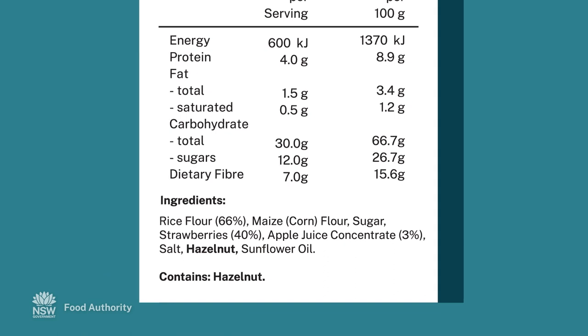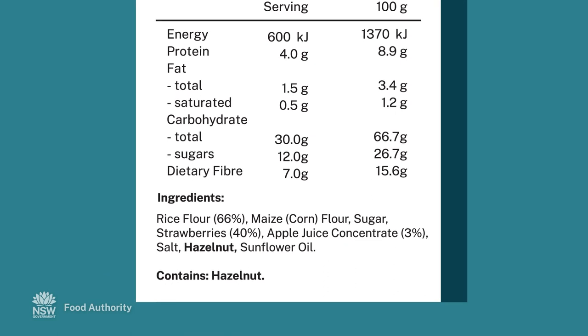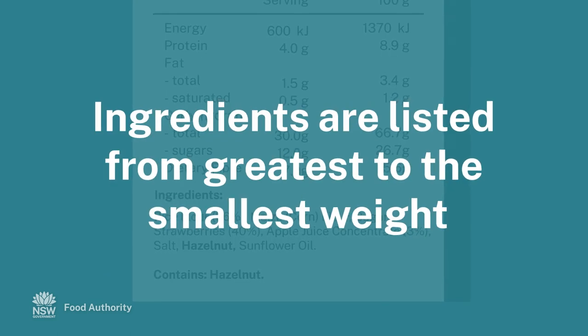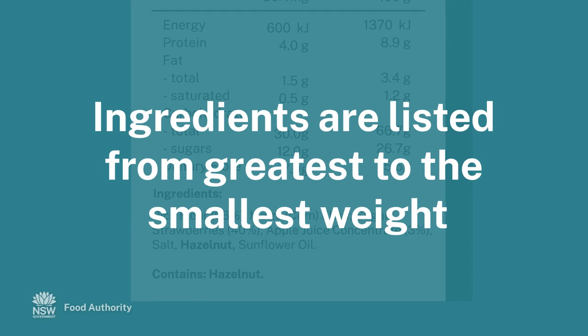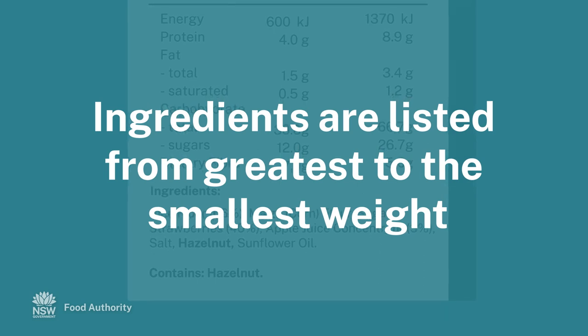The ingredients section on a label describes what's in the product. Ingredients are always listed from greatest to smallest by weight.